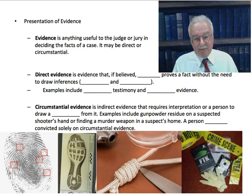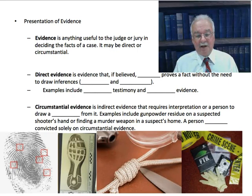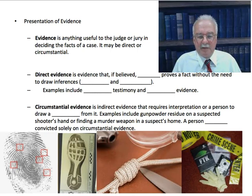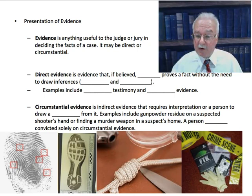Evidence is anything useful to the judge or jury in deciding the facts of the case. It can be direct or circumstantial. Direct evidence, if believed, directly proves a fact without the need to draw inferences or conclusions. One example might be eyewitness testimony or a videotape of an incident — say, a convenience store robbery on camera. That's direct evidence: you see the person doing the robbery, you don't have to infer anything. Same with the testimony of an eyewitness.